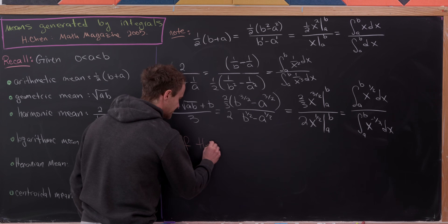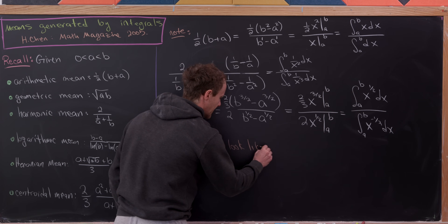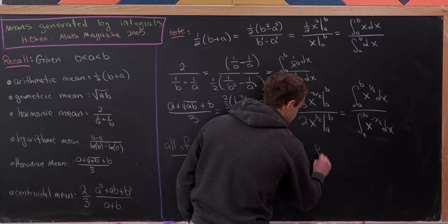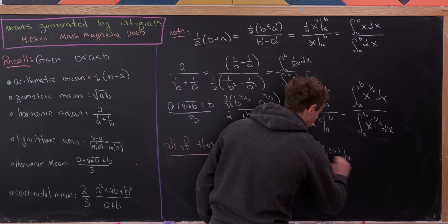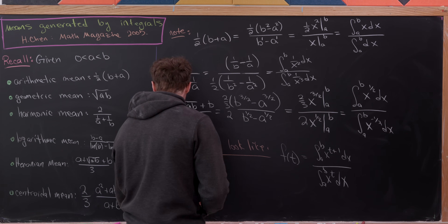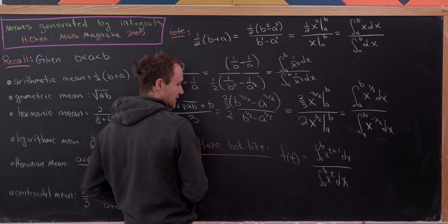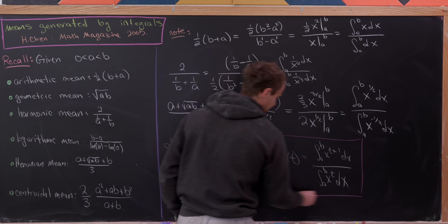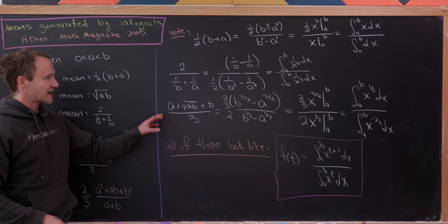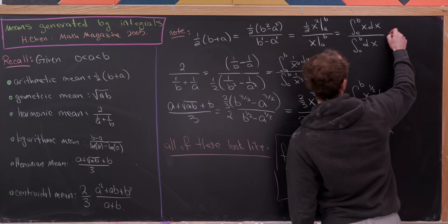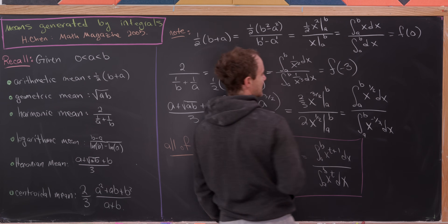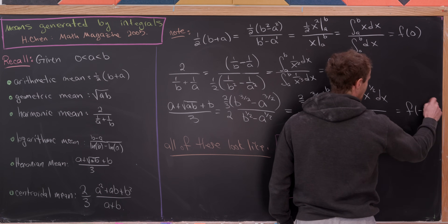All of these look like the following: define f(t) as the integral from a to b of x^(t+1) dx over the integral from a to b of x^t dx. In other words, we have an integral of a power of x in the denominator and an integral of a power larger by one in the numerator. In this language, the harmonic mean is f(-3) and the Heronian mean is f(-1/2).